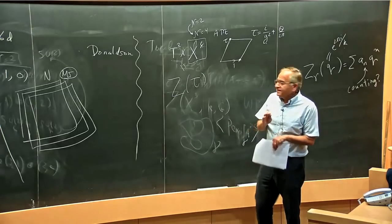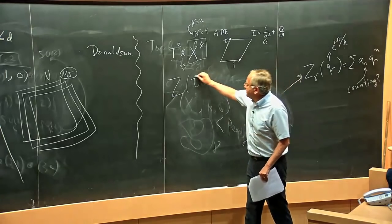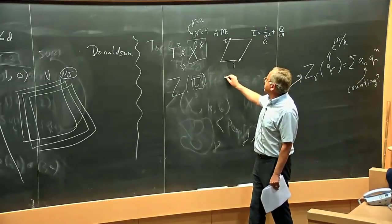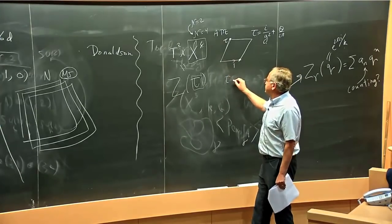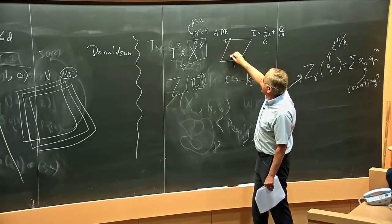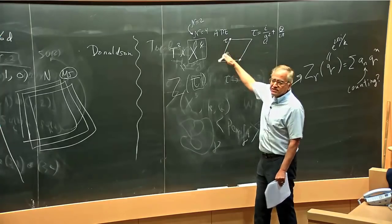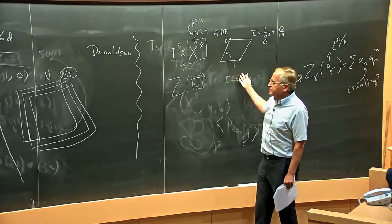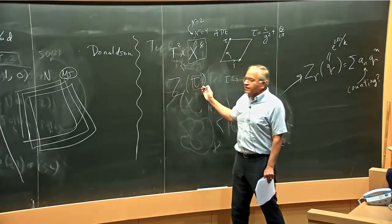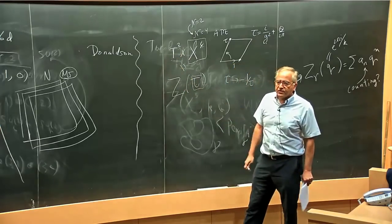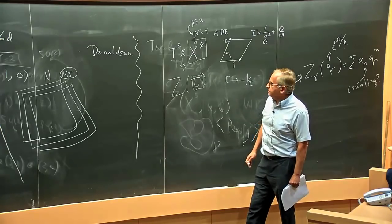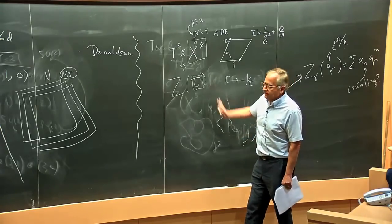This explains strong-weak duality: the symmetries of the torus have SL(2,Z) symmetry, which means replacing τ with -1/τ — exchanging the two sides of the torus — is a natural symmetry. So the symmetries of the geometry in six dimensions encode strong-weak dualities of the four-dimensional gauge theories. It's quite a non-trivial connection.